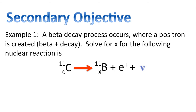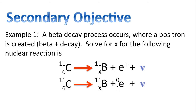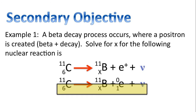Now on to our secondary objective: to review three examples. Example 1 — a beta decay process occurs where a positron is created. Solve for X. I'm going to rewrite this to include the numbers for the positron: mass number of zero and a charge of one. Focusing on the charge row: 6 equals X plus one, or X equals five. Remember, during a beta plus decay, a neutrino is always created as well, so that should be included in the equation.